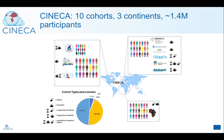The Cineca project aims to enable the harmonization of metadata across 10 different cohorts from around the world. One cohort in particular is called CHILD, or the Canadian Healthy Infant Longitudinal Development Study, which examines the environmental, genetic, and socioeconomic factors that lead to the development of asthma and allergy in children.